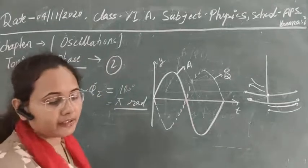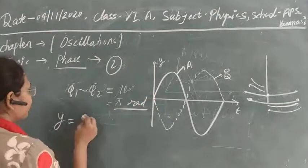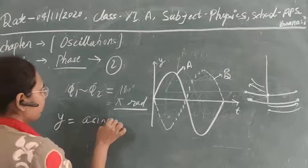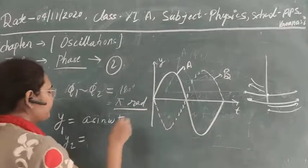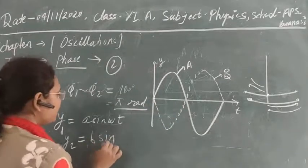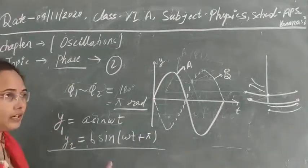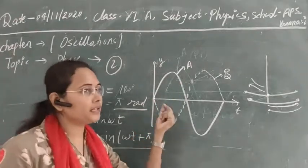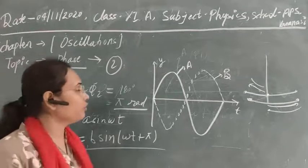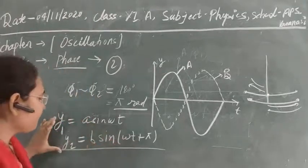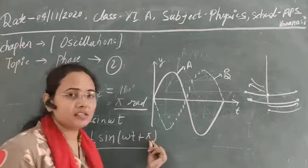We can write displacement equations for these two particles. If one wave is y₁ = A sin(ωt) and the second wave has a different amplitude, y₂ = B sin(ωt + π). So we can write the displacement equations for two particles once we know the phase relationship between them — we simply add the phase difference to one of the waves.